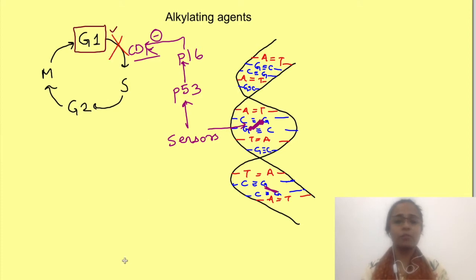Now there are certain cancer cells with p53 mutation. So cancer cells with p53 mutation are resistant to these alkylating agents. Now another drug cisplatin also acts just like these alkylating agents.